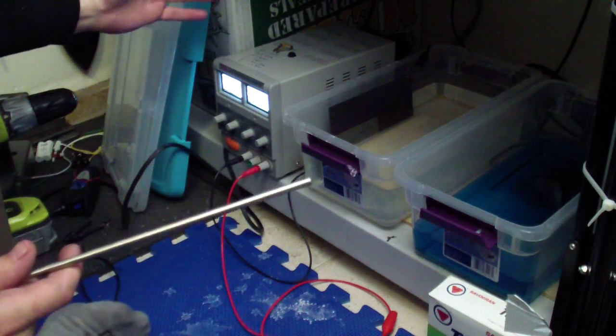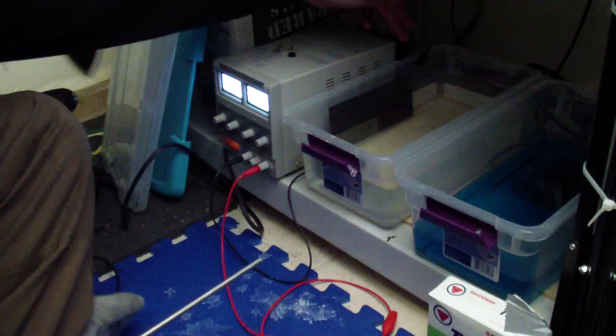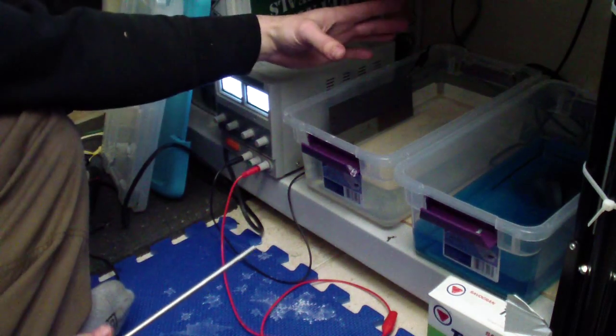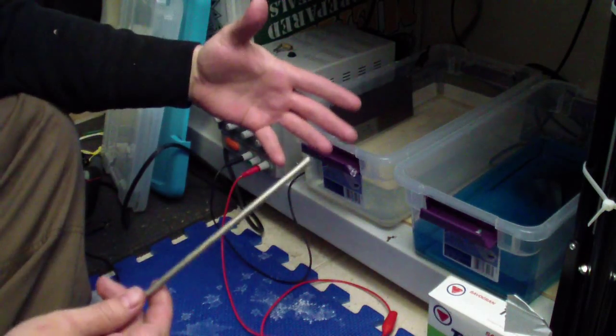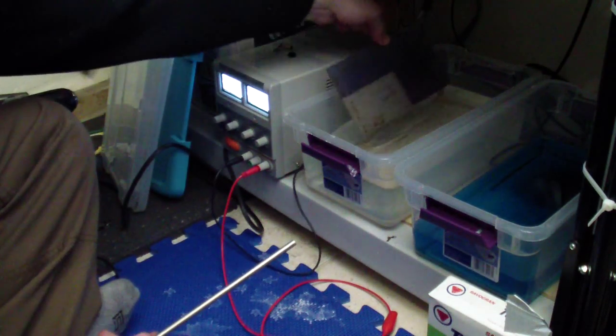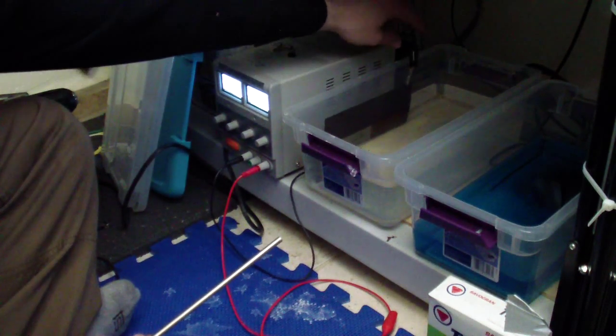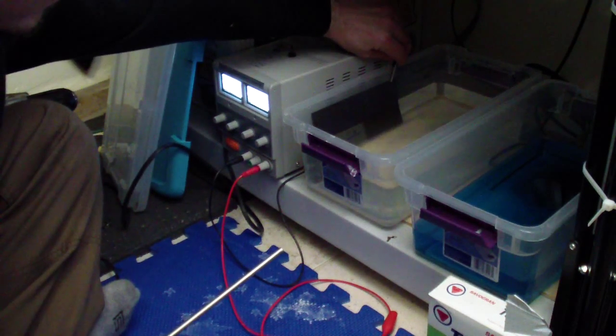What you do is you put your negative lead on a titanium little plate. The plate is supposed to be larger than the object that you're anodizing. If you get a plate like this, that's plenty big. It doesn't matter on the thickness or anything.